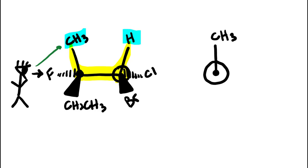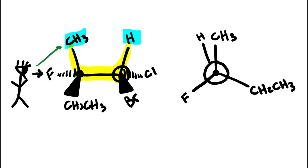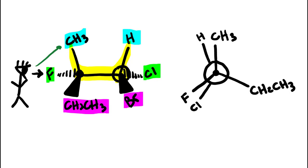Looking at the front carbon, what's on a wedge is coming out of the screen toward us. From cyclops man's perspective, the ethyl group is going to be down and to the right, and the fluorine is going to be down and to the left since it's behind the screen. Now for the back carbon, the hydrogen is directly behind the methyl, so we draw hydrogen as close as we can to the methyl on the back carbon. Directly behind the fluorine is the chlorine, so chlorine goes down and to the left close to the fluorine. And directly behind the ethyl group is a bromine, so bromine goes down and to the right attached to the back carbon. And that's how you draw the eclipsed conformation for this molecule.